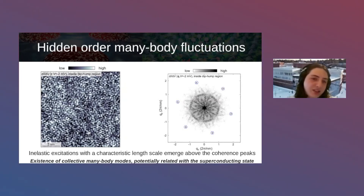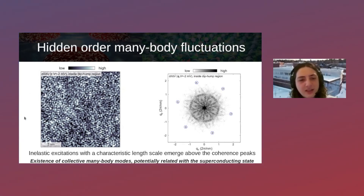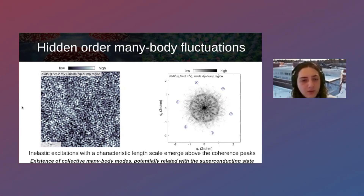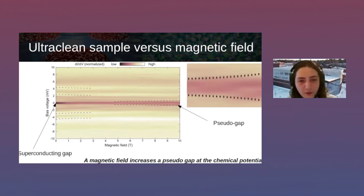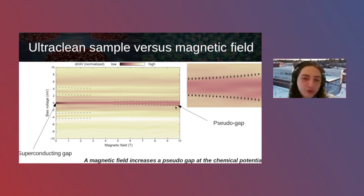Even more interesting: in the ultraclean sample at energies very close to the gap, we observe inelastic excitations with a well-defined wavelength, which we believe are a signature of the underlying pairing glue of this unconventional superconducting order. This is very similar to the (π,π) excitations in high-Tc superconductors associated with the antiferromagnetic state. Additionally, when we apply very large magnetic fields to the ultraclean sample, we open a pseudogap in the electronic structure that is enhanced by the field — again similar to the phenomenology in correlated superconductors.